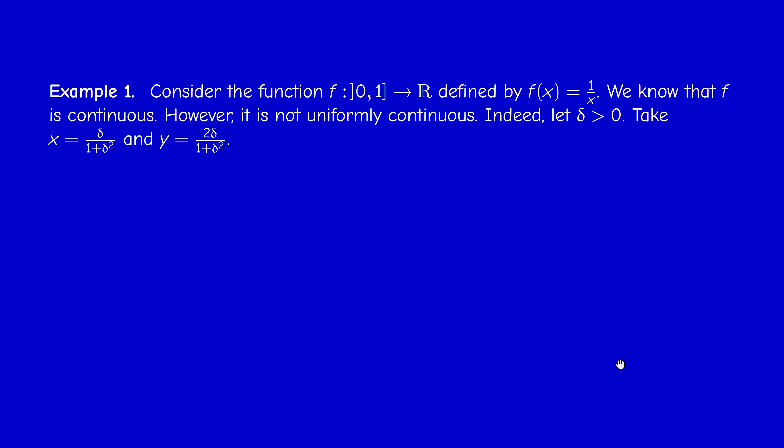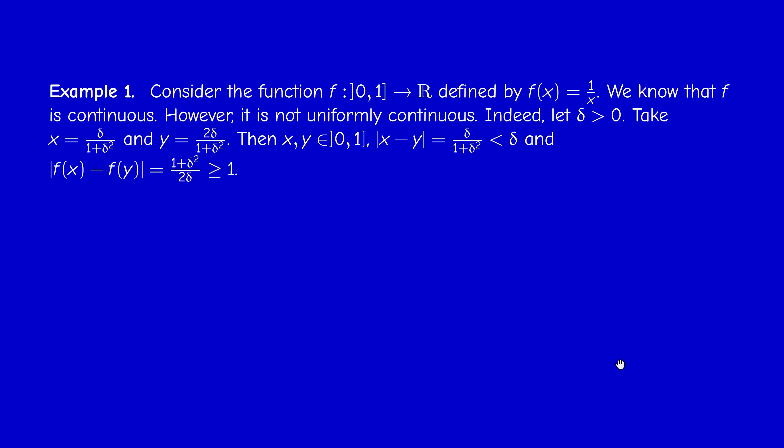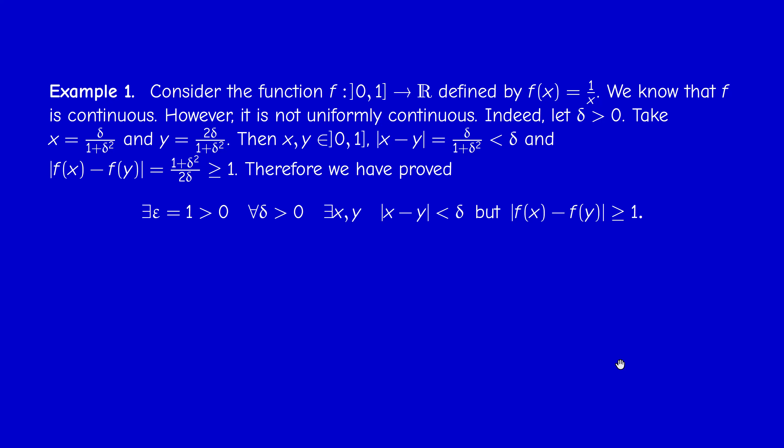Pick a number delta positive, and take x to be delta over 1 plus delta squared, and y to be 2 times x. Then x is between 0 and 1, because delta is less than 1 plus delta squared, and y is also less than or equal to 1 and positive. The distance between the two is delta over 1 plus delta squared, which is less than delta, since we divide by something bigger than 1. Computing 1 over x minus 1 over y, we get 1 plus delta squared over 2 delta, which is bigger than or equal to 1, since 1 plus delta squared is always bigger than 2 delta. So we found an epsilon equal to 1 such that for any delta, we can find x and y whose distance is less than delta, but whose image distance is at least epsilon.